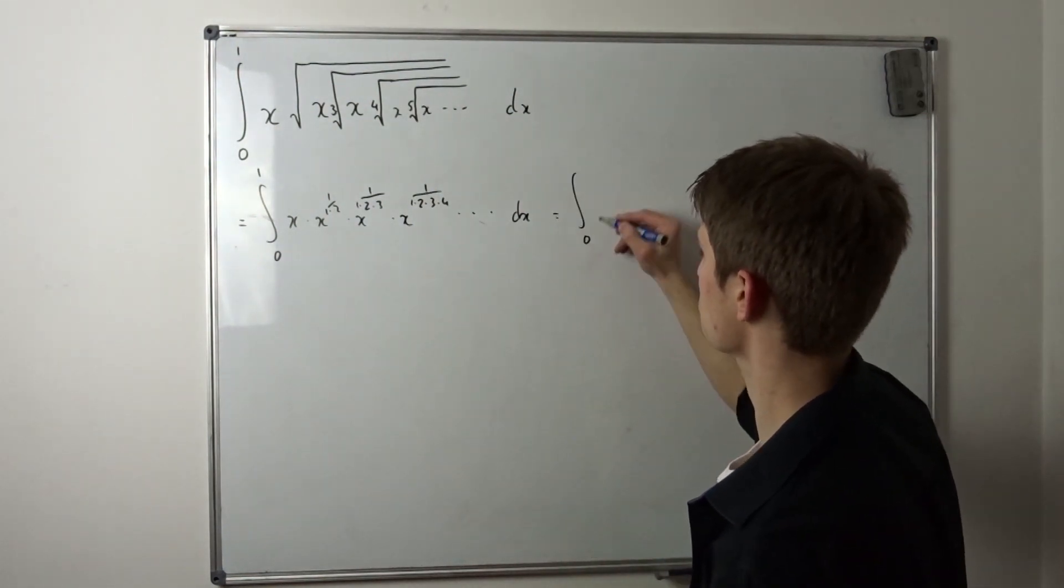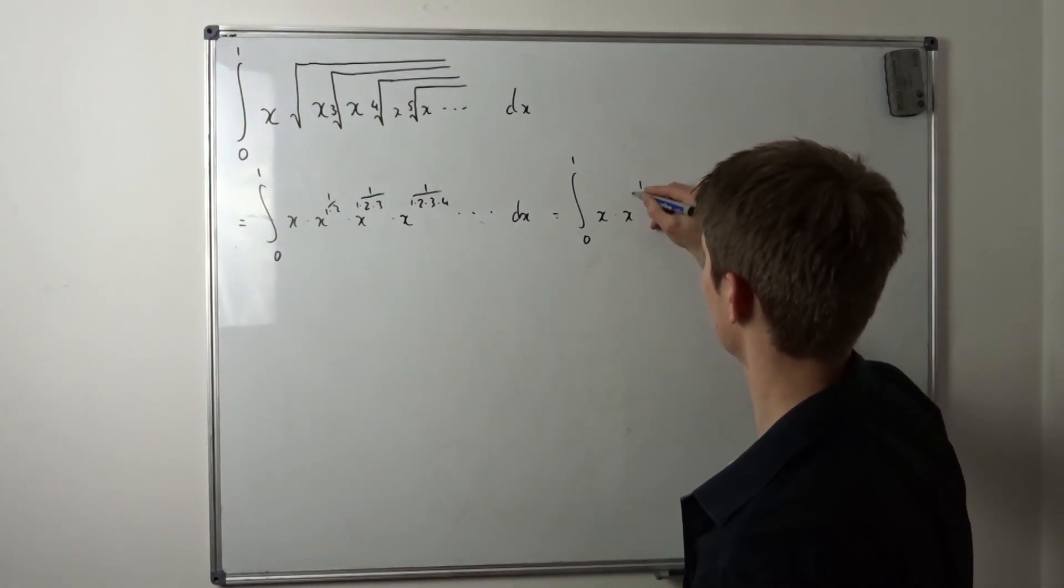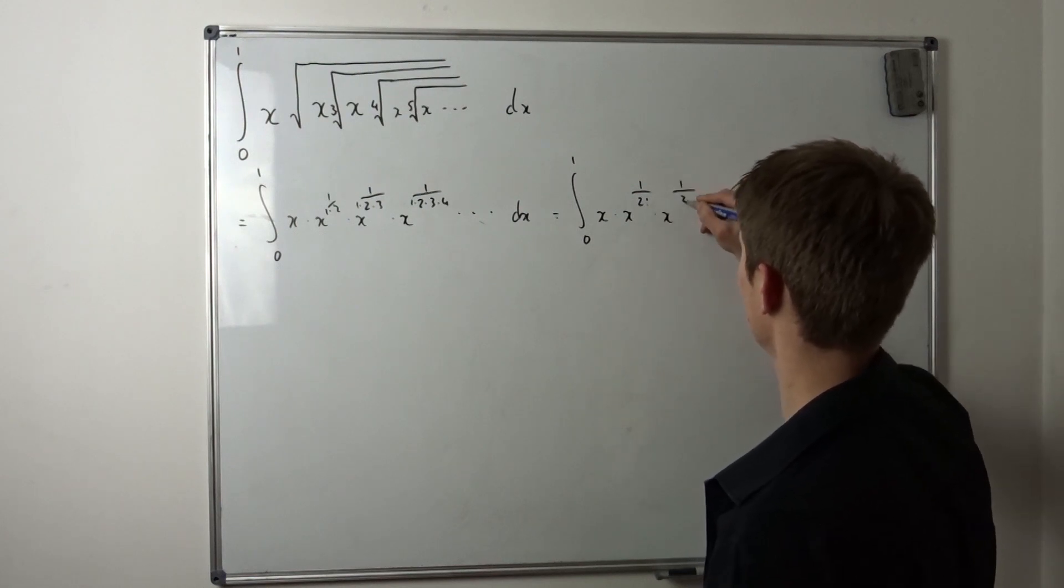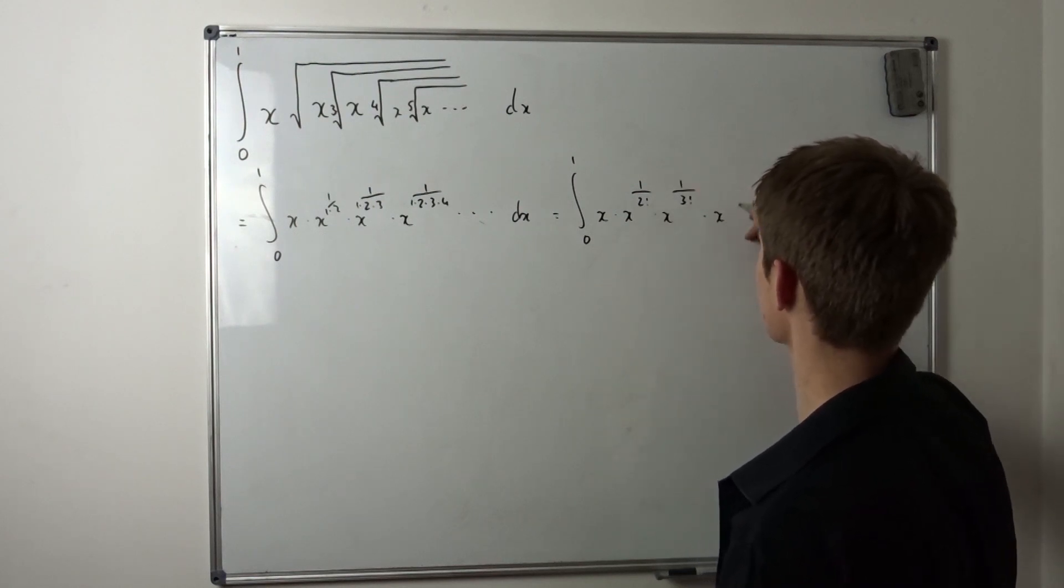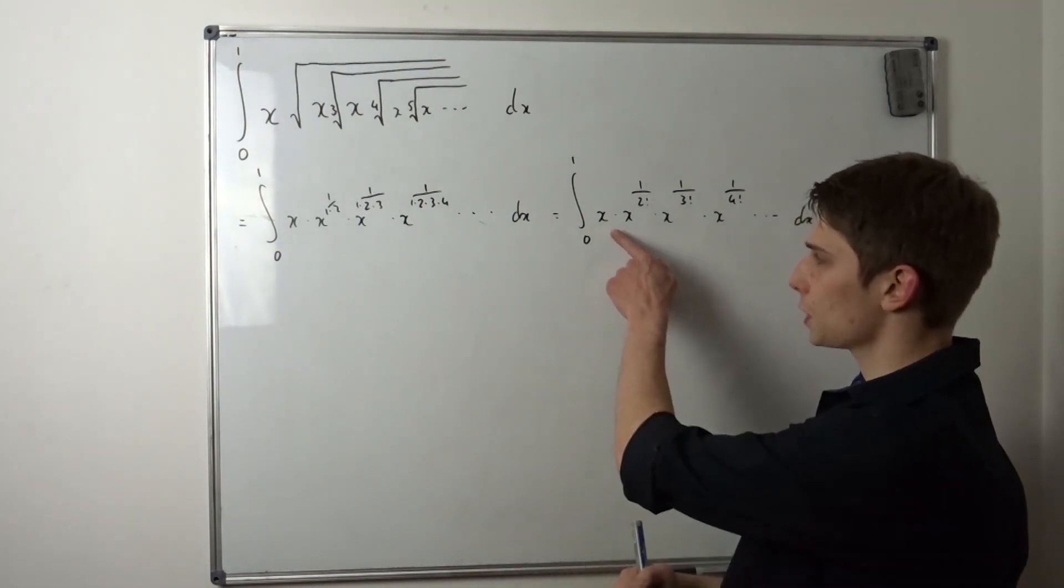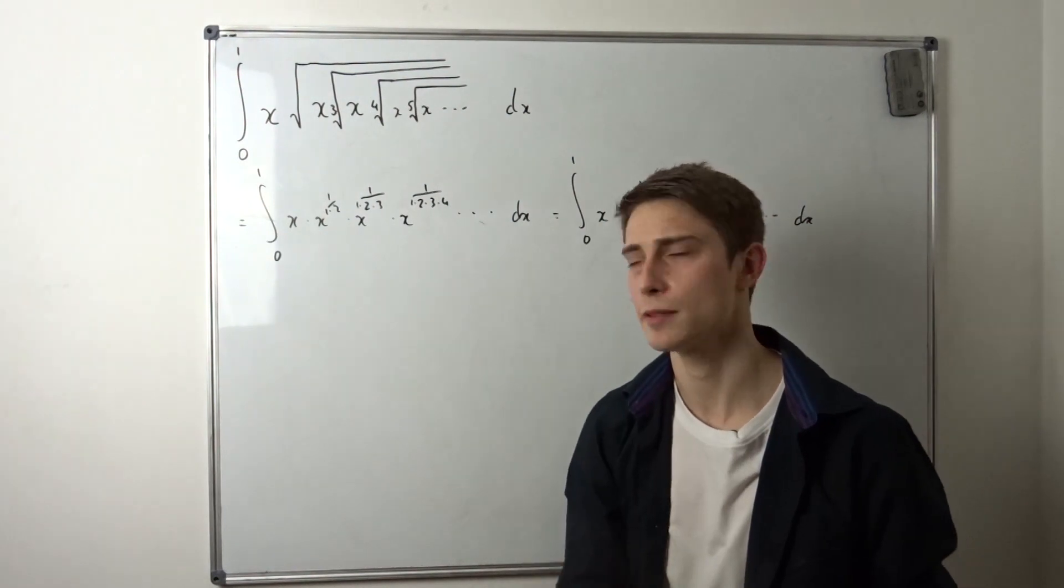So this is the integral from zero to one of x times x to the one over two factorial times x to the one over three factorial times x to the one over four factorial and so on dx. That's a nice property. We got the same base, so we can bring those exponents together. We can add them together.